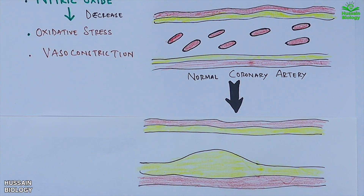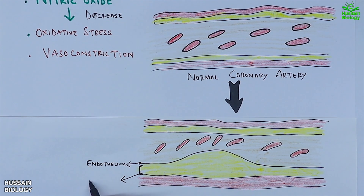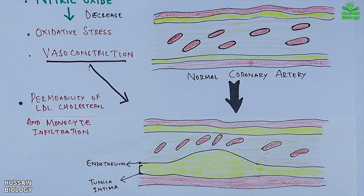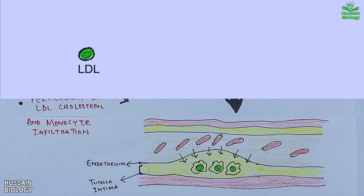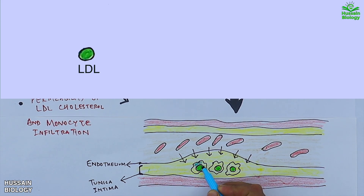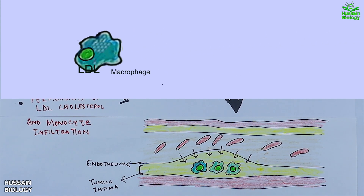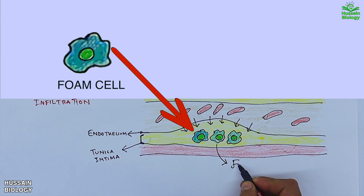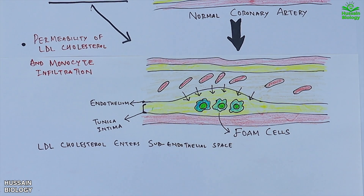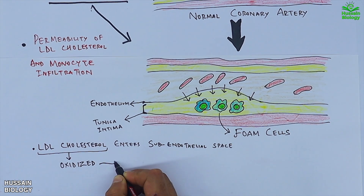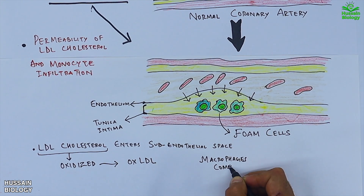The inner layer in the diagram is the endothelium, followed by the tunica intima. At this stage, LDL cholesterol becomes easily permeable to the endothelial membrane and enters the sub-endothelial space. Monocytes also infiltrate the sub-endothelial space. The LDL is oxidized into ox-LDL form, and then macrophages like monocytes engulf the ox-LDL molecule. This complex is now called a foam cell.